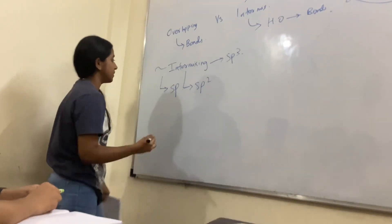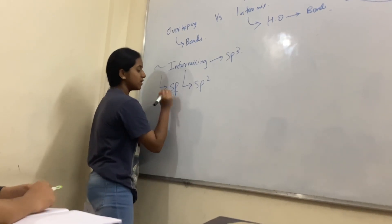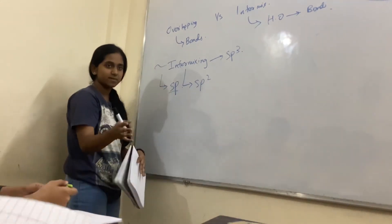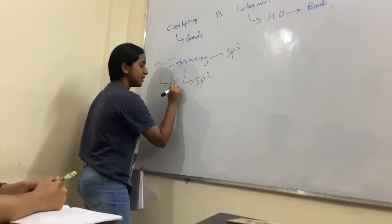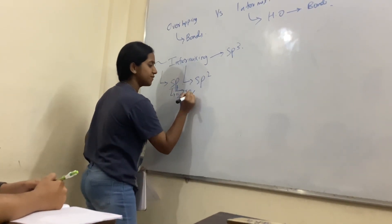Now in SP hybridization, S orbital is the orbital in the mixed movement. The S character is 50% and the P character is 50%.